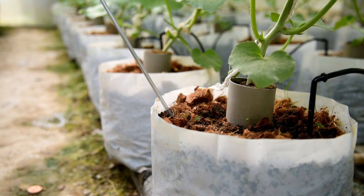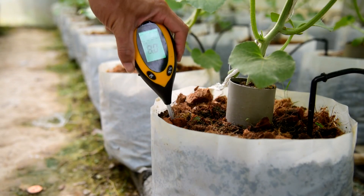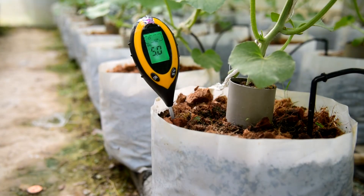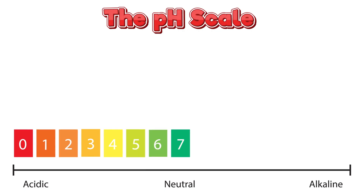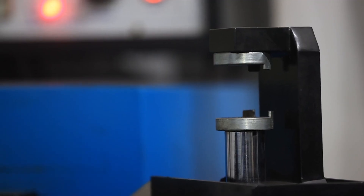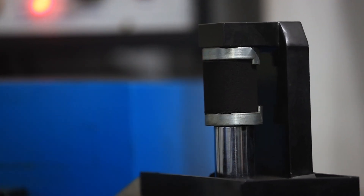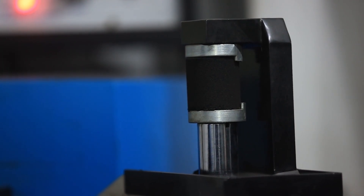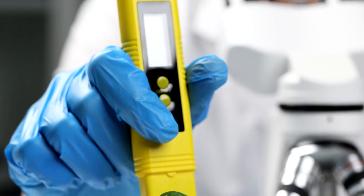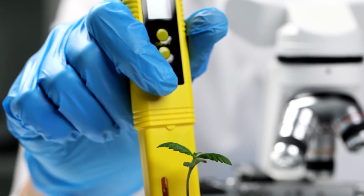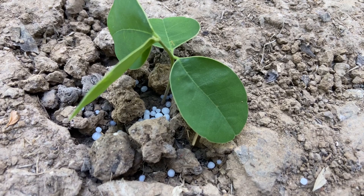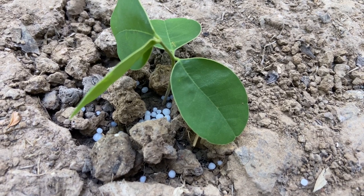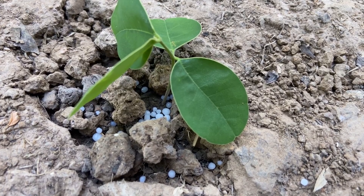Soil pH is a measure of the acidity or alkalinity of your soil, and it plays a vital role in gardening and plant health. The pH scale ranges from 0 to 14, with 7 being neutral. Soils with a pH below 7 are considered acidic, while those above 7 are alkaline. Most garden plants thrive in slightly acidic to neutral soils, typically within a pH range of 6 to 7. Soil pH affects the chemical form of nutrients, influencing their availability to plants.